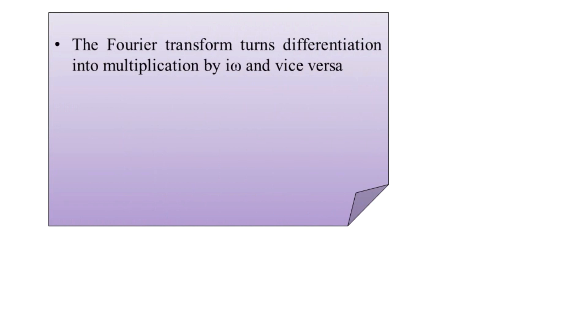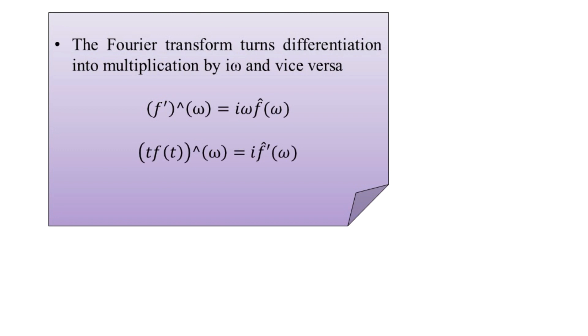Finally, the Fourier transform turns differentiation into multiplication by the factor i·omega, where omega is the angular frequency, and this also works in the vice versa mode. This last property can be expressed with mathematical expressions. This concludes the topic of continuous Fourier transformation. In the next lecture, we shall address the continuous time-frequency representation of the signal, examine the capabilities of the Fourier transform tool for signal processing, then move to the windowed Fourier transform or short-time Fourier transform, and ultimately transition into wavelet theory and the continuous wavelet transform.